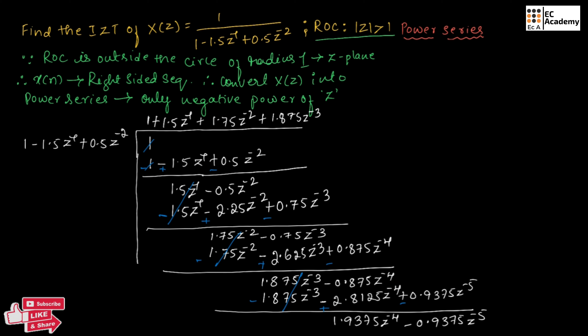Now, this is a recurring pattern, so we can stop after 3 or 4 iterations. Therefore, X of Z is equal to 1 plus 1.5 Z inverse plus 1.75 Z to the power of minus 2 plus 1.875 Z to the power of minus 3 plus and so on — it is a recurring value.